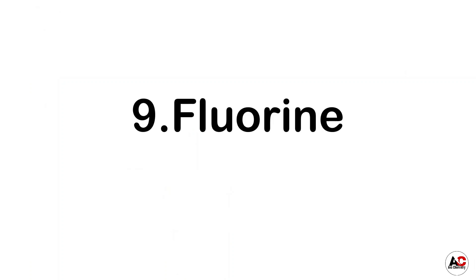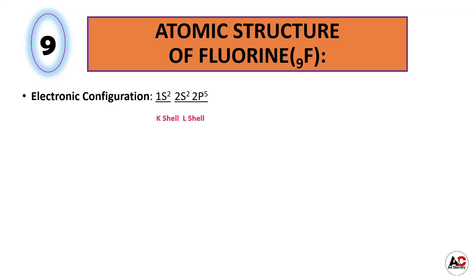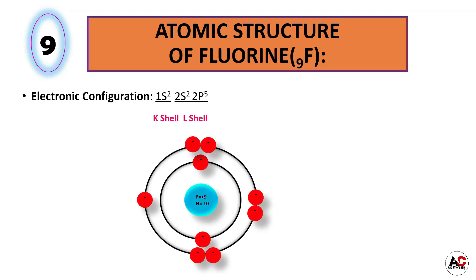Now fluorine. Atomic structure of fluorine. The atomic number of fluorine is 9, meaning it has a total of 9 electrons. So the electronic configuration of fluorine is 1s2, 2s2, and 2p5. The atomic structure of fluorine will be like this. It has 9 protons and 10 neutrons inside the nucleus and 9 electrons around the nucleus: 2 are in the K shell and 7 are in the L shell.